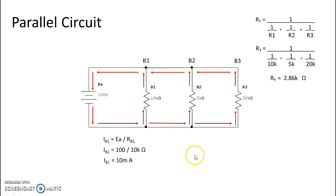So then we go over to branch two and we do the same process, voltage divided by the resistance, and so 100 divided by 5k gives us a current through branch two of 20 milliamps.